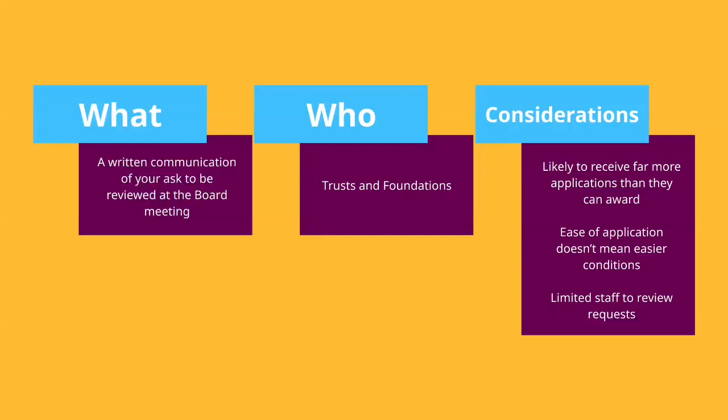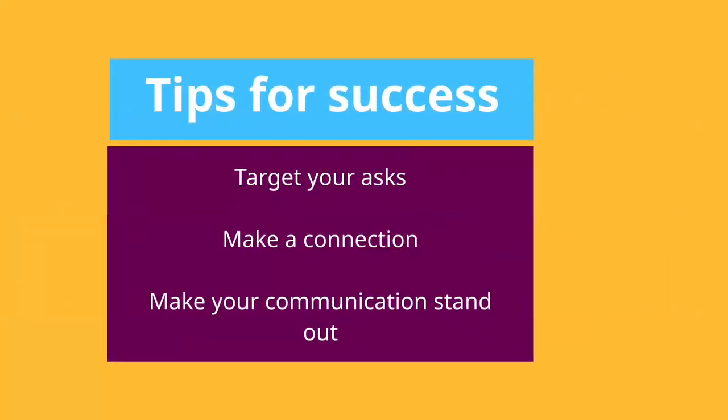It is important to consider that just because the application process is easier, it doesn't mean there won't be conditions that are unfavourable to your charity. To increase your likelihood of success with letters of support, target your asks to those charitable trusts and foundations you have researched which support charities like yours. Make a connection with the charity before you make an ask. If they don't have a website, look at the Charity Commission and see who is named on their accounts or if you can connect with any of their trustees. This way, you can establish what is really important to them so you can pull this out in your writing. You can test if you are a good fit and make sure that they know who your charity is when it comes to filtering asks. These funders get countless letters every day, so think creatively about how you can make yours stand out amongst the appeals.